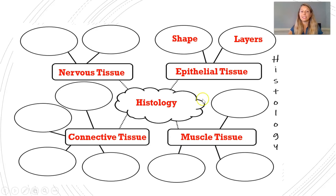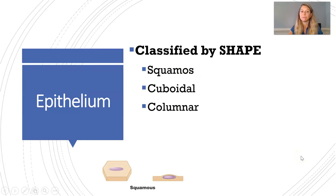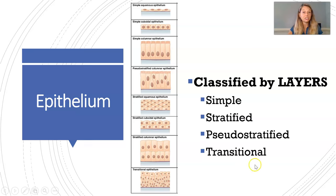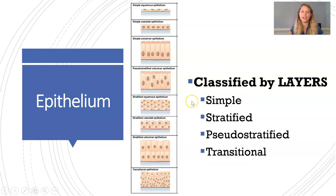Epithelial tissue is classified by shape and by layers. There are three shapes: squamous, which means flat; cuboidal, which means like a cube; and columnar, which means stretched out. For layers, we call it simple if it has just a single layer of cells, stratified if it has multiple layers, and pseudostratified, which is not fully parallel — kind of funky and not uniform looking.